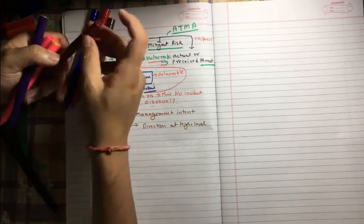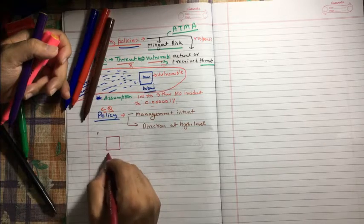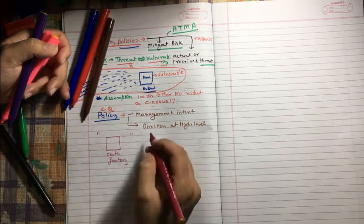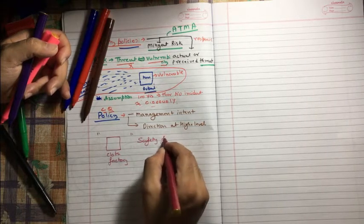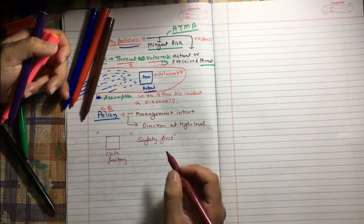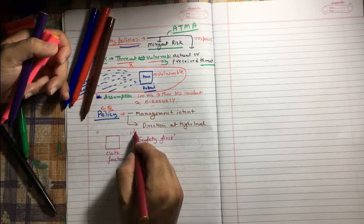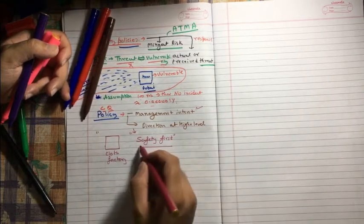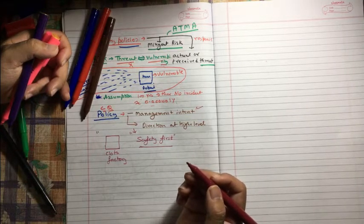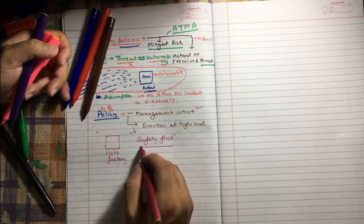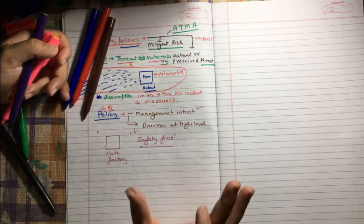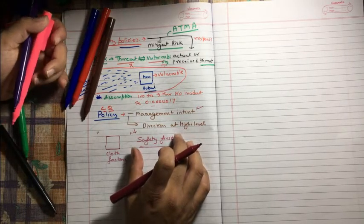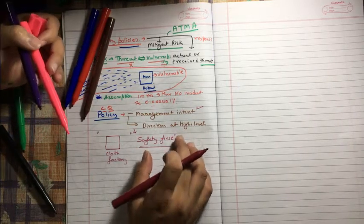What does it mean? It means policy mentions what management is expecting on a high level. Example - there is a factory, a cloth factory where we are manufacturing cloth. There is a policy saying safety first. This is policy. Management is saying whatever comes to you, if it's going to compromise your safety, you need to give the priority on safety. Safety first. That's the management intent. And this is very high level.